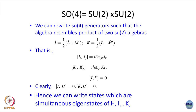Getting back to the slide: if you see the slide, the SO(4) core generators — you can try to rewrite a linear combination with the rescaled Runge-Lenz vector with L such that you see the I is exactly like an SU(2) algebra, and there is another SU(2) algebra with K, and these two do not talk to each other.